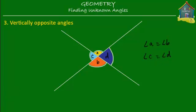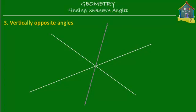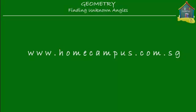Now, what if there are more than two lines? If you have three lines crossing each other at a single point O, then there will be three sets of vertically opposite angles. For homework, go and find out which are the vertically opposite angles in that case. That's all I'm going to talk about in this lesson. I hope you've understood it, and I hope you'll go and solve some practice exercises at www.homecampus.com.sg.